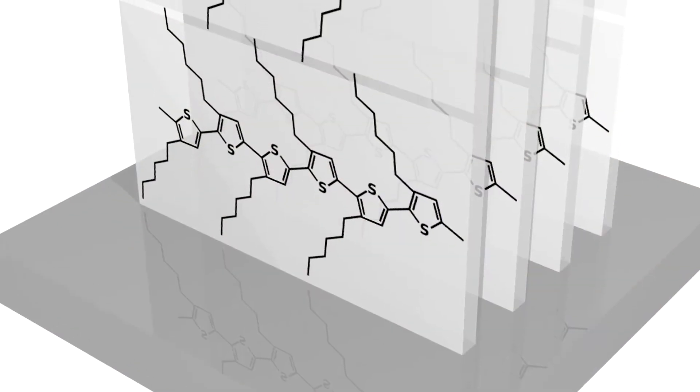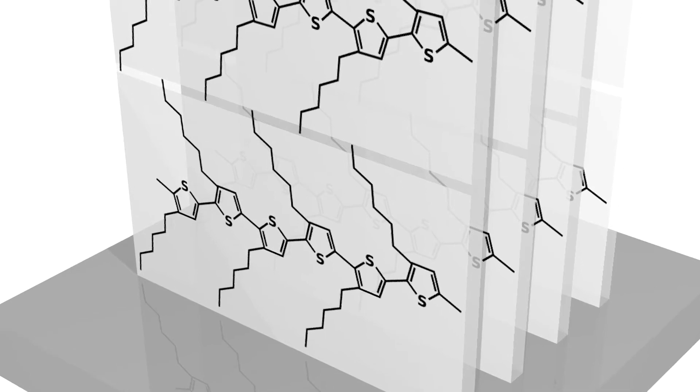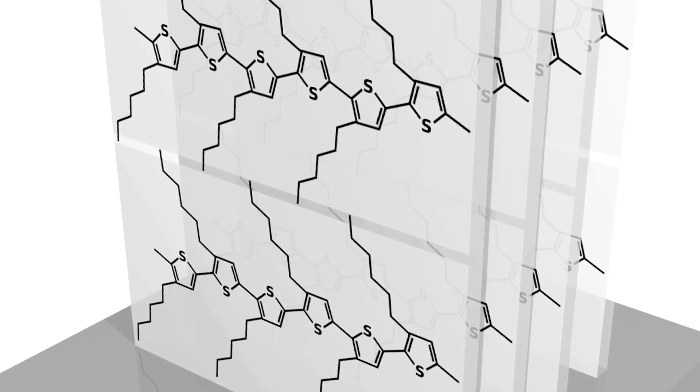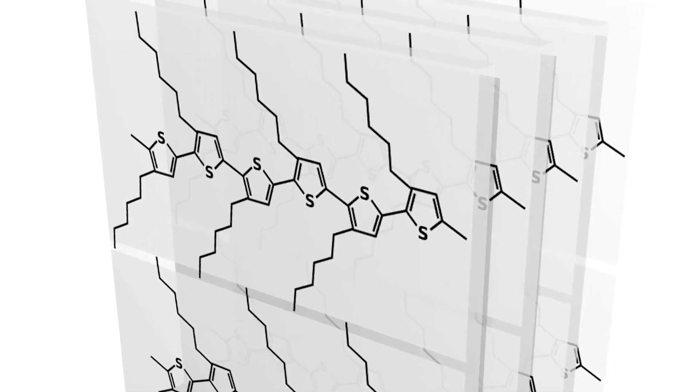One example of a project here in the CFN where we used both small angle and wide angle X-ray scattering was a solar cell project. We were looking at organic photovoltaic materials which are solar cell materials made out of polymers rather than something inorganic like silicon.